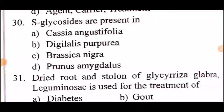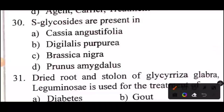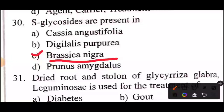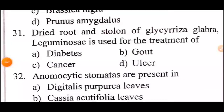Question 30 of 60: Where are glycosides present? Answer is Option C: Brassica nigra.